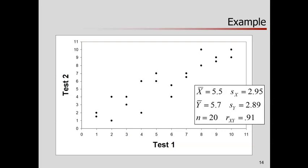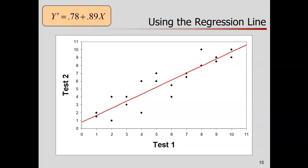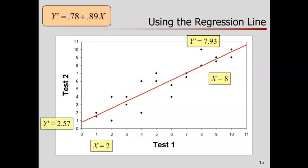The clearest way to understand this statistically is through the standardized solution to a regression equation. Here's an example using scores from 20 people taking a couple of tests. There are summary statistics and a strong correlation of 0.91 — the x variable tells us a lot about the y variable. In the unstandardized regression equation: for a score of 8 on x, we predict 7.93 on y; for a score of 2 on x, we predict about 2.57 on y.